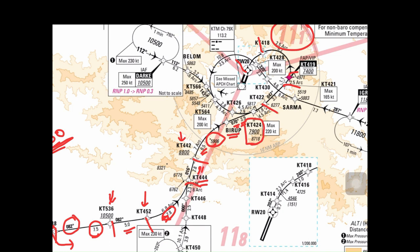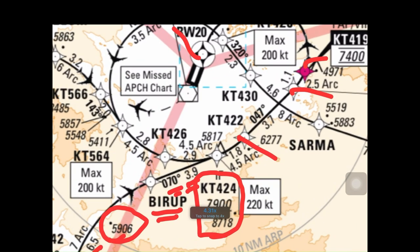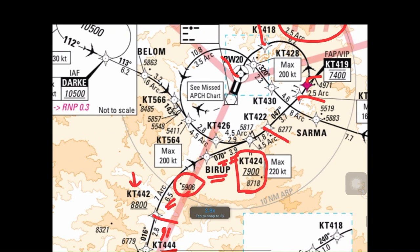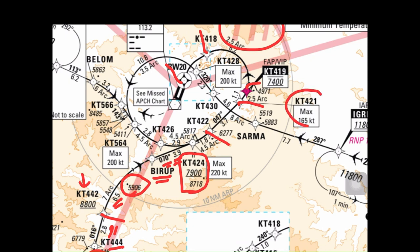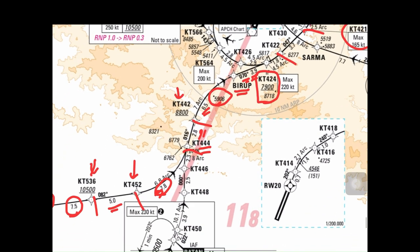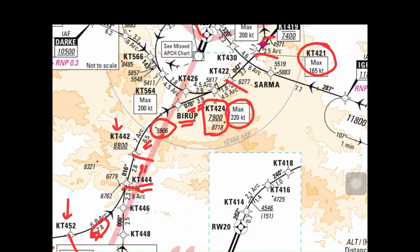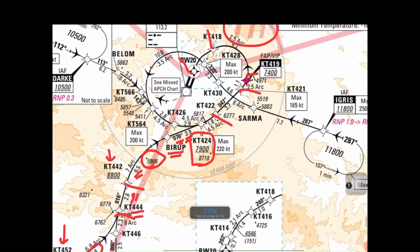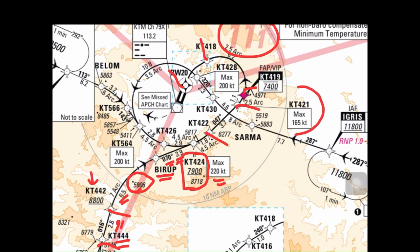From KT 424, you travel 1.8 nautical miles to report at KT 422. Whenever you see a black line, the heading is shown at the top and the distance to the next waypoint is shown below. Each waypoint has a white box indicating the maximum speed at that point. At KT 424, the maximum speed is 220 knots — you can fly slower, but not above 220 knots. At KT 421, the speed limit is 165 knots.